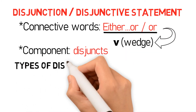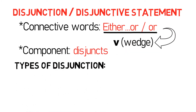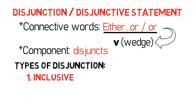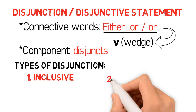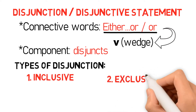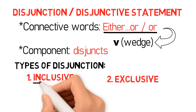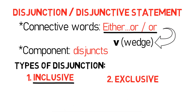Basically, there are two types of disjunctive statements used in symbolic logic, namely inclusive and exclusive disjunction. In this edition, I will only focus on inclusive disjunction.